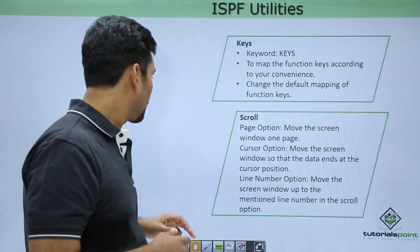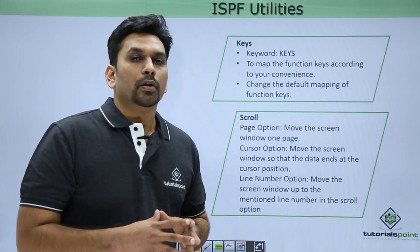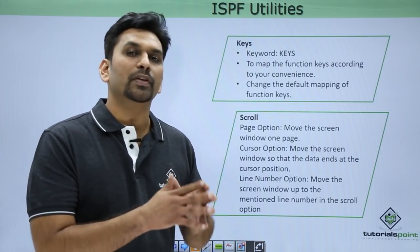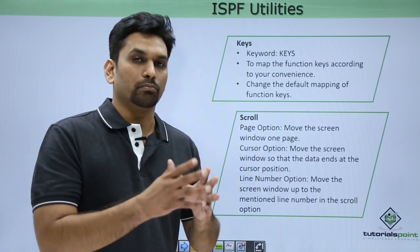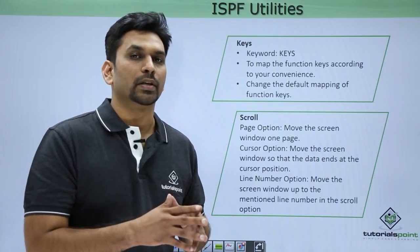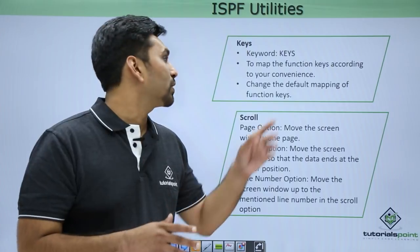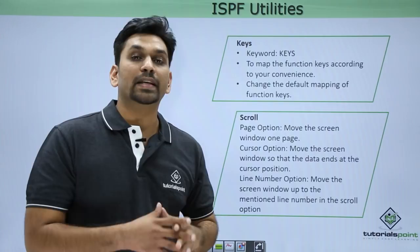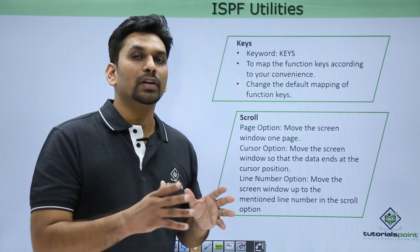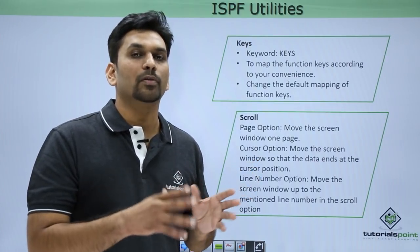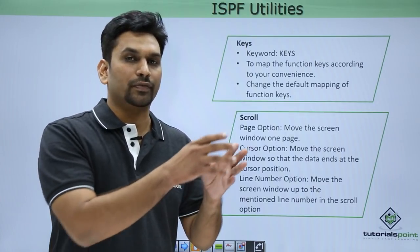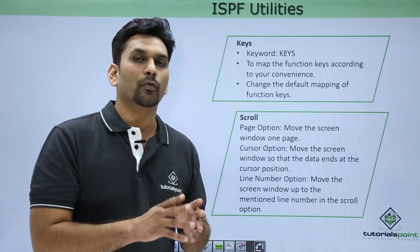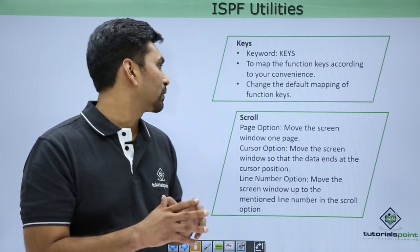The Keys command is used to map function keys according to your convenience. For example, when you press F3 it exits from the screen. If you want F4 to exit instead, type 'keys' in the command line and press Enter. A new menu will display the current mapping. Change F3's exit mapping to F4, hit Enter, and the changes will be saved. Now pressing F4 will exit.